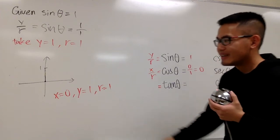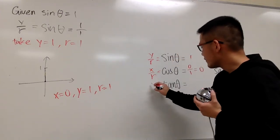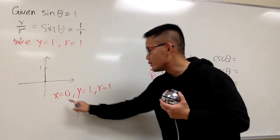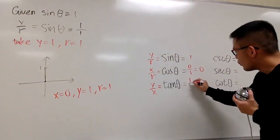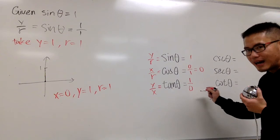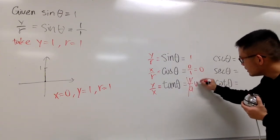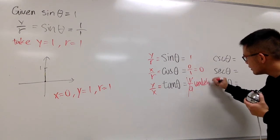Tangent is what? y over x. Let me write this down first, y over x. y is 1, x is 0. So right here, I'll have to write down 1 over 0. But this right here, it's not possible. We cannot divide by 0. So the response for this will be undefined.